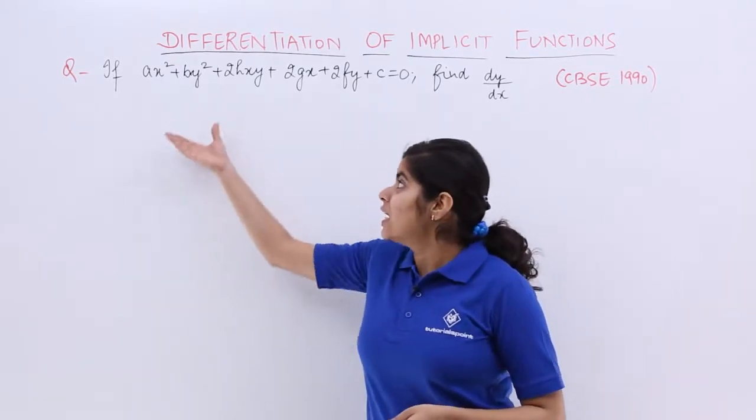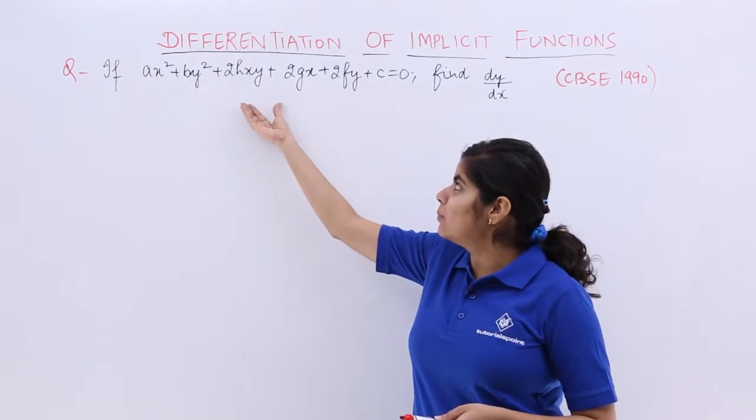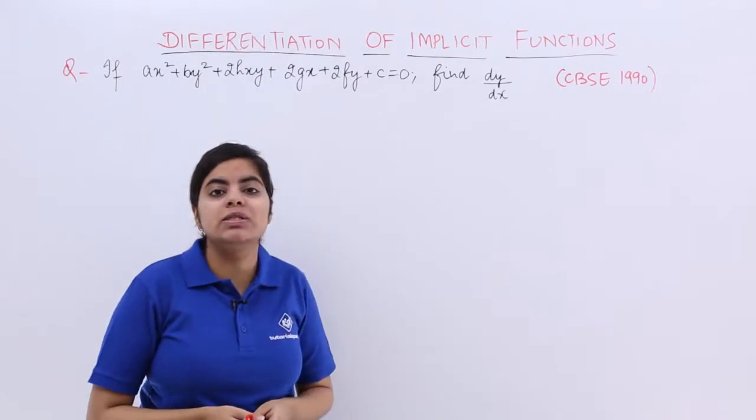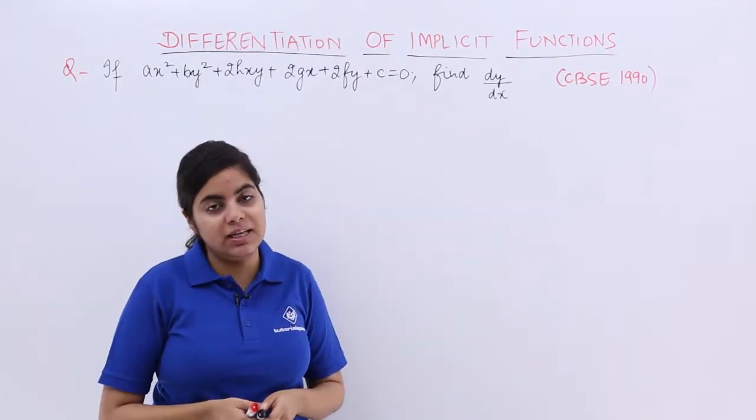The question says, if x² + by² + 2hxy + 2gx + 2fy + c = 0, find dy/dx.